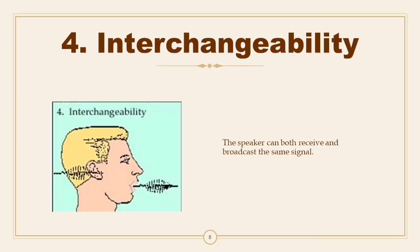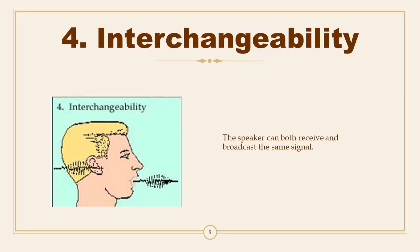Fourth: Interchangeability. The speaker can both receive and broadcast the same signal. This is distinctive from some animal communications, such as those of the stickleback fish. Sticklebacks make auditory signals based on gender — basically, the males say 'I am a boy' and the females say 'I am a girl.' However, male fish cannot produce the 'I am a girl' signal, although they can perceive it. Thus, stickleback signals are not interchangeable.